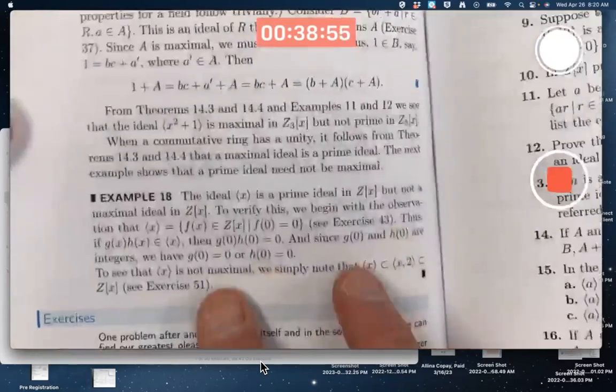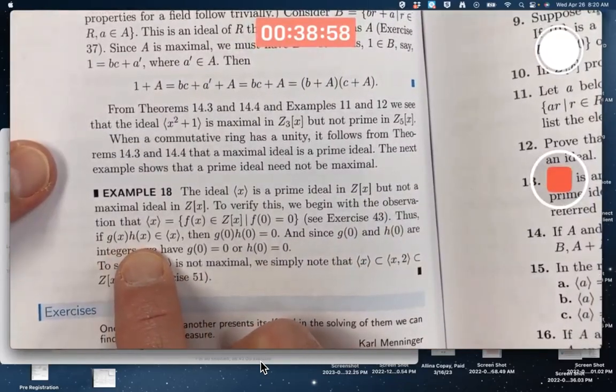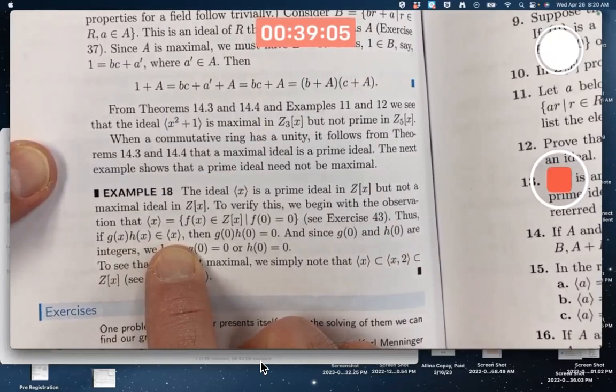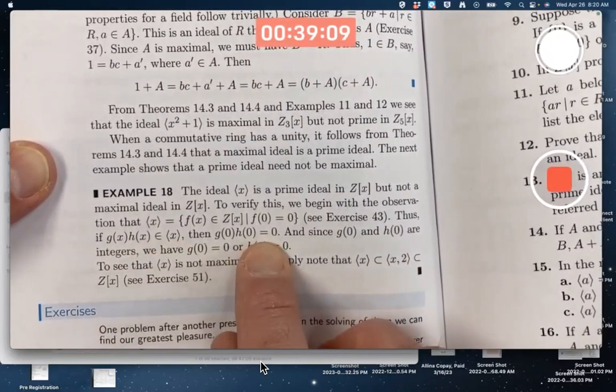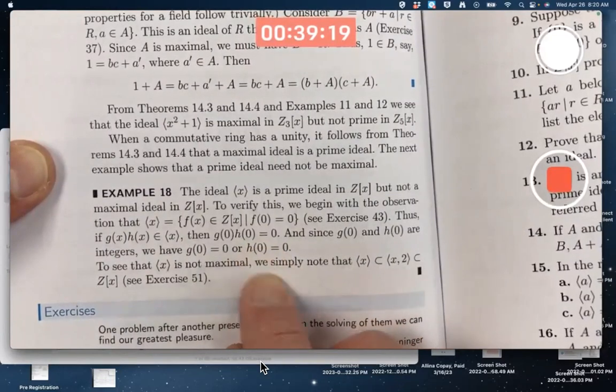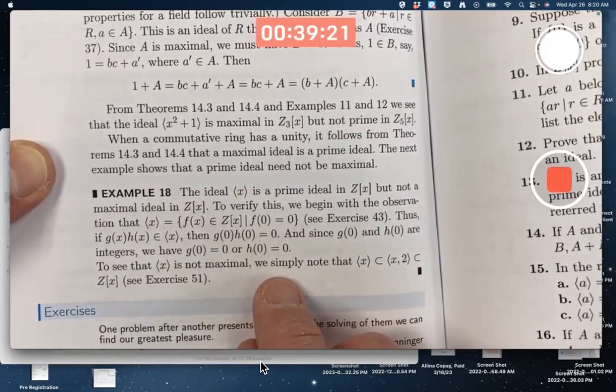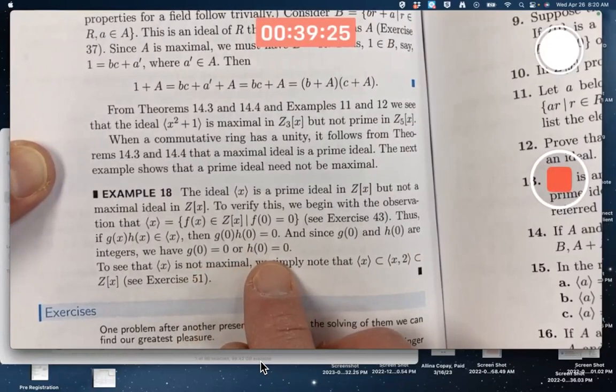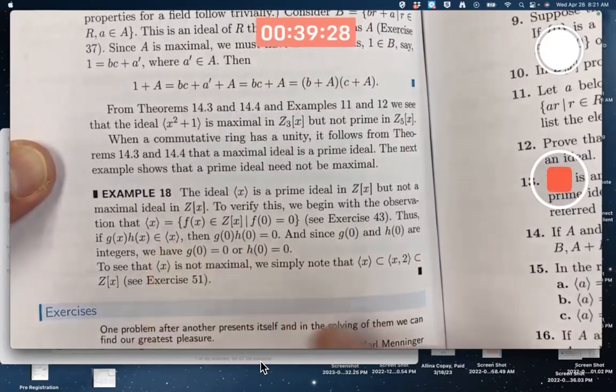So assume you've got the product of two arbitrary polynomials being in this ideal. Since this ideal consists of all polynomials with zero constant term, meaning when you plug in x equals zero you get zero, this must be true. We are talking about polynomial ring with integer coefficients, and the integers do form an integral domain—no zero divisors. Therefore g(0) is zero or h(0) is zero, meaning either g(x) is in there or h(x) is in there.